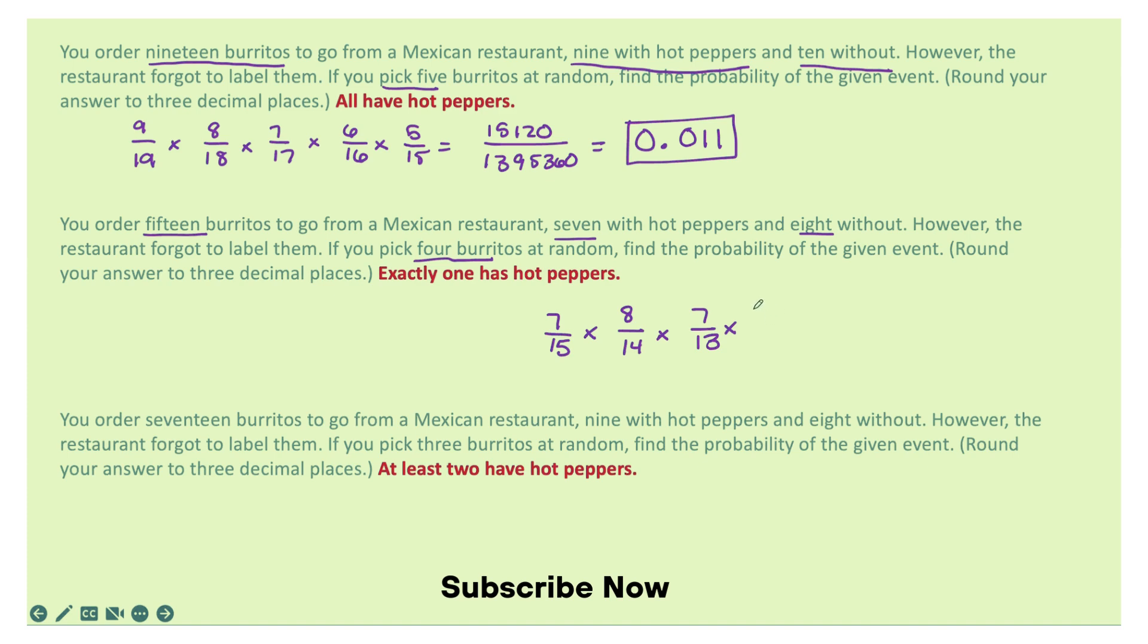And 6 out of 12 left without hot peppers. So if I multiply 7 times 8 times 7 times 6, I get 2,352. And then if I multiply all of my denominators, I get 32,760, and that equals 0.072 as my probability.